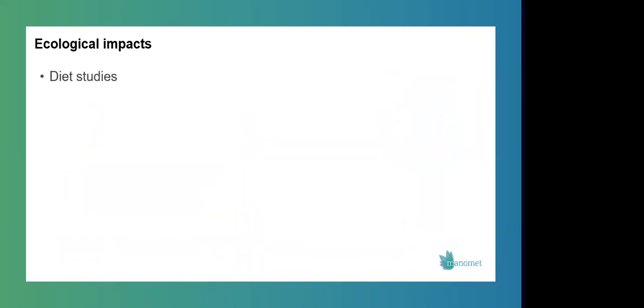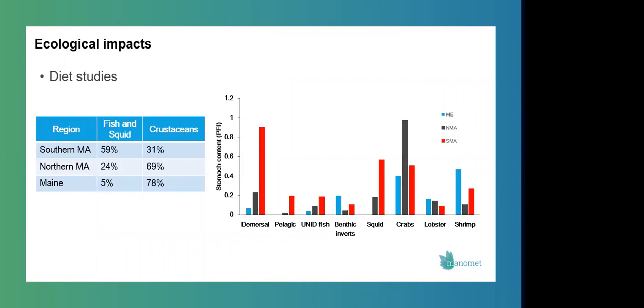So we've been working to understand these impacts on multiple fronts. The first thing we've been doing is looking at black sea bass diet. So collecting fish samples and dissecting their stomachs to figure out what they're eating. And we've done this on a regional scale, collecting fish in southern Massachusetts, which is within the historical range of black sea bass. And in two areas in the Gulf of Maine, northern Massachusetts and mid-coast Maine.